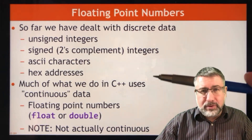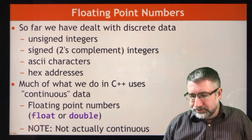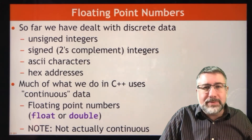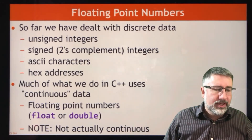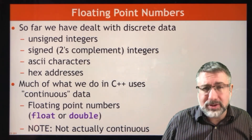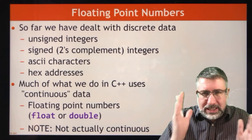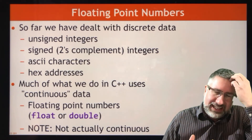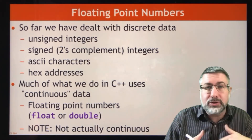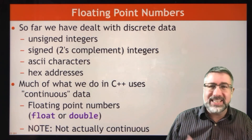A lot of what we do in higher level languages is in fact continuous, or we'd like it to be continuous. Now floating-point numbers are not continuous, but you have far more numbers between each number and you can get as specific as you want because you can use exponents with floating-point numbers.